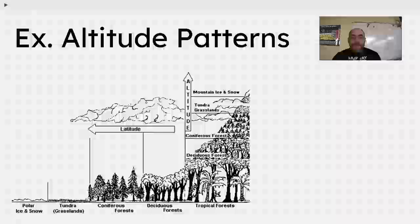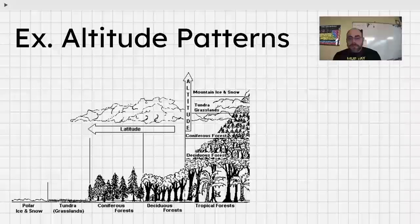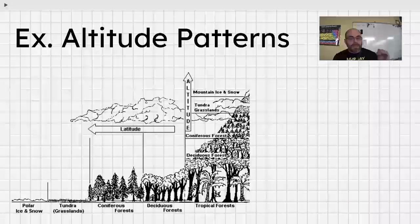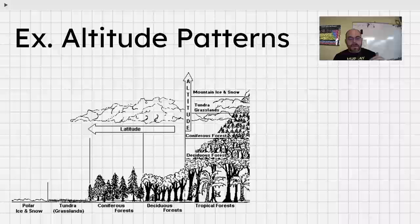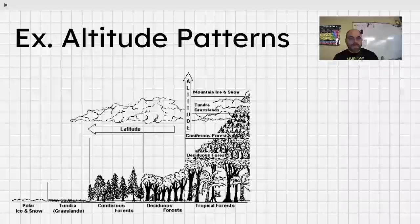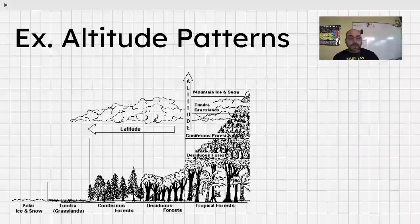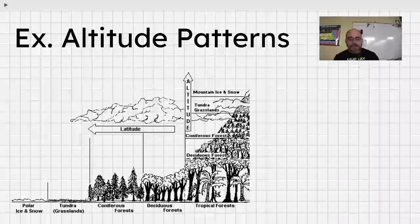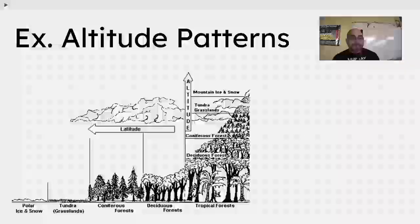Something that mimics latitude is altitude. And so, the idea that as you climb a mountain, it's almost like going from the equator to the poles. Because you start at the bottom where there's more precipitation, less temperature or more temperature. But as you get higher and higher up, you have less and less precipitation and less and less temperature. And so altitude oftentimes mimics what you see, the patterns on latitude.